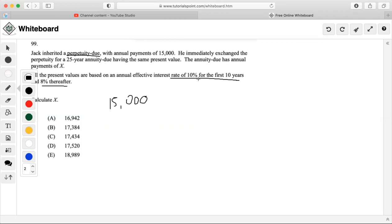In order to calculate the perpetuity due, we have to observe this: it says that all the present values are based on an annual effective interest rate of 10% only for the first 10 years and 8% thereafter. So what would that look like if it would be applied to a perpetuity due? Well, we know that the perpetuity would first start with $15,000 over 10%, then after the 10 years are up, then it would switch over to 8% thereafter.